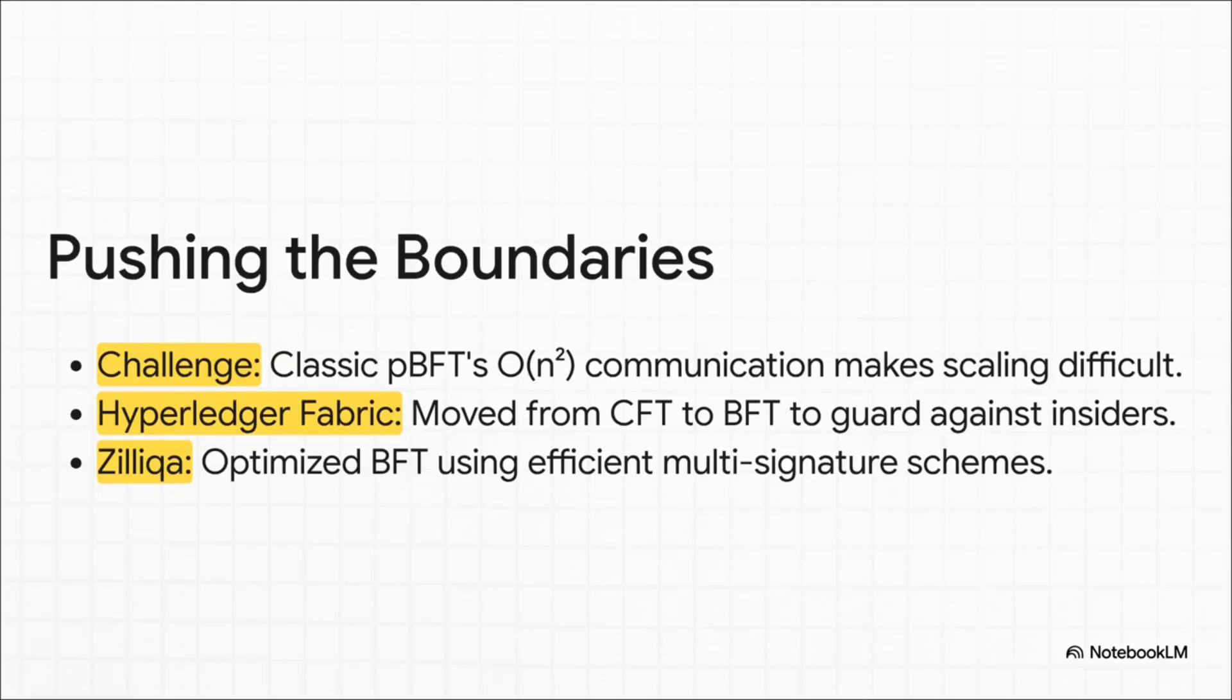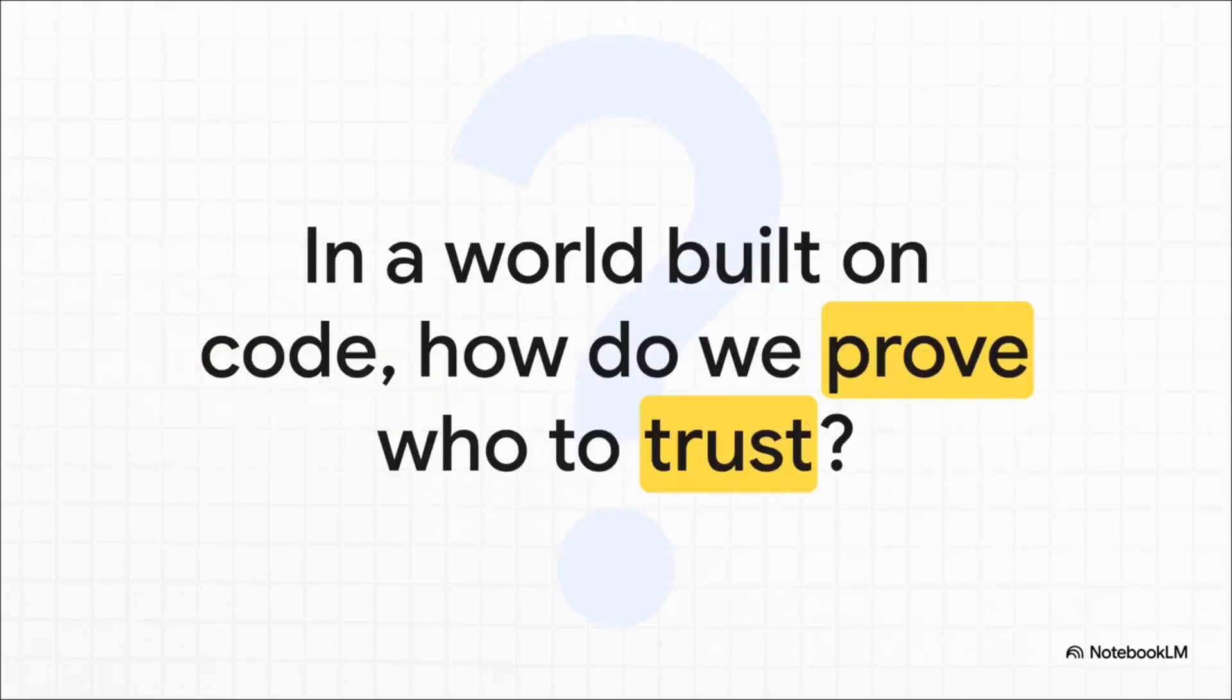At the end of the day, the crucial takeaway is this: that 40-year-old thought experiment about ancient generals is still one of the most vital questions we have to answer. As we build more and more of our world on distributed code, from our financial systems to our AI, the ability to mathematically prove who to trust isn't just some academic exercise anymore. It's the very foundation of our entire digital future.